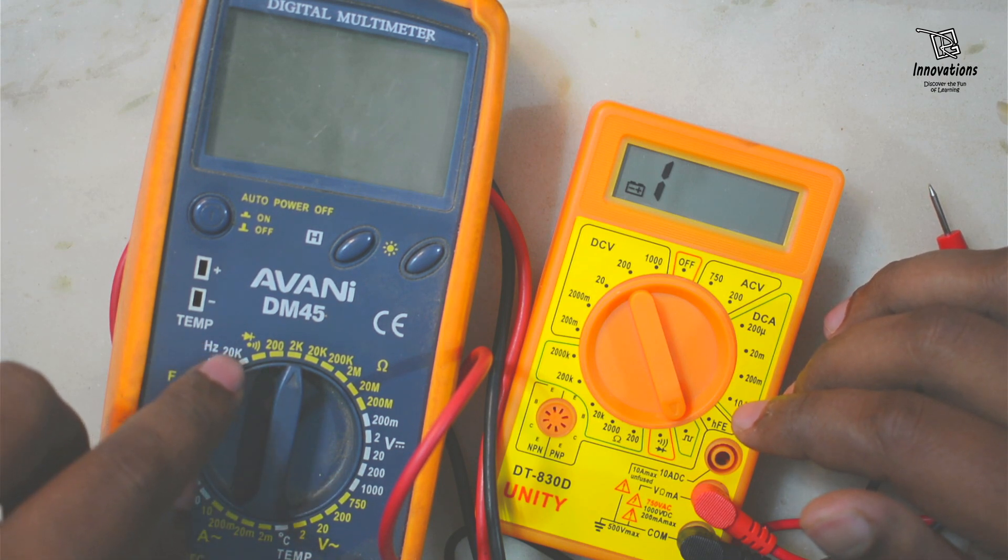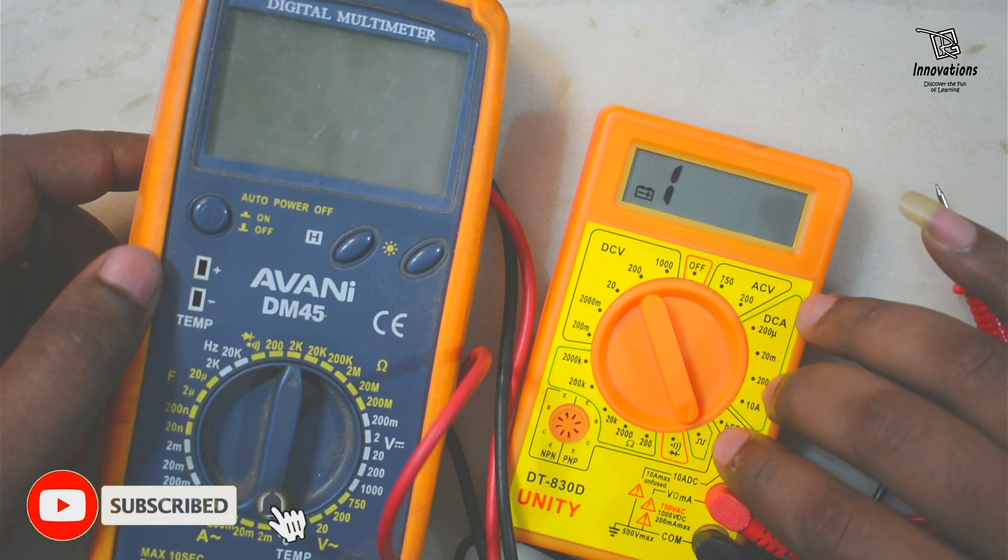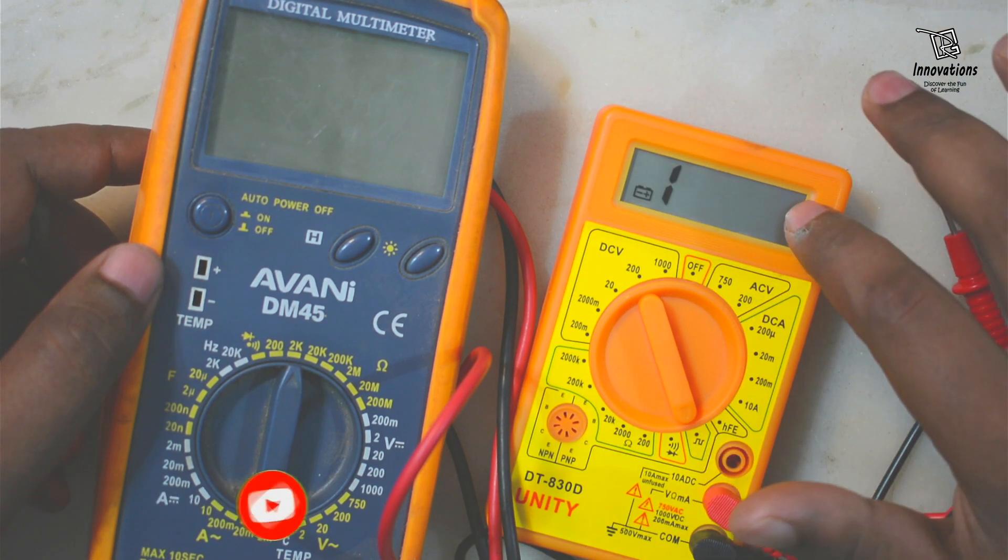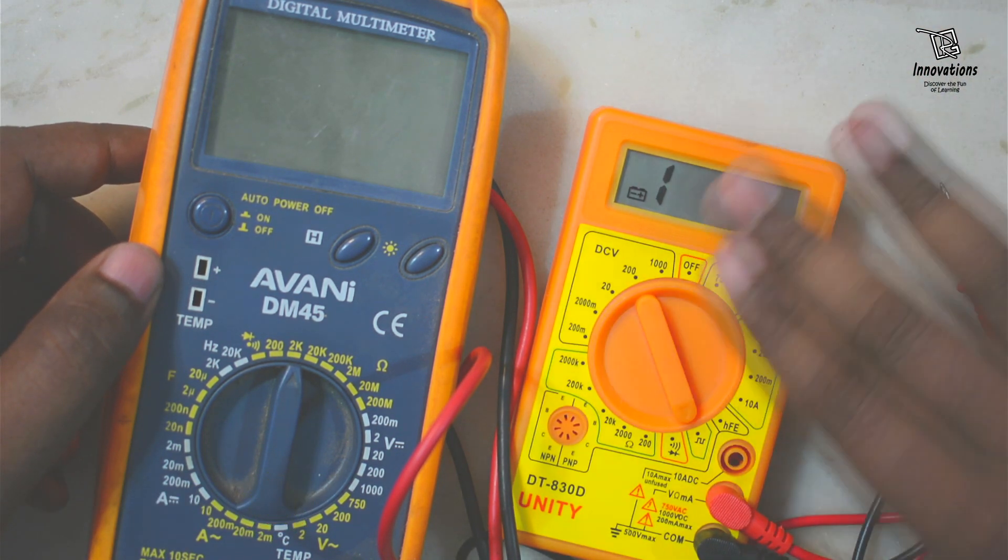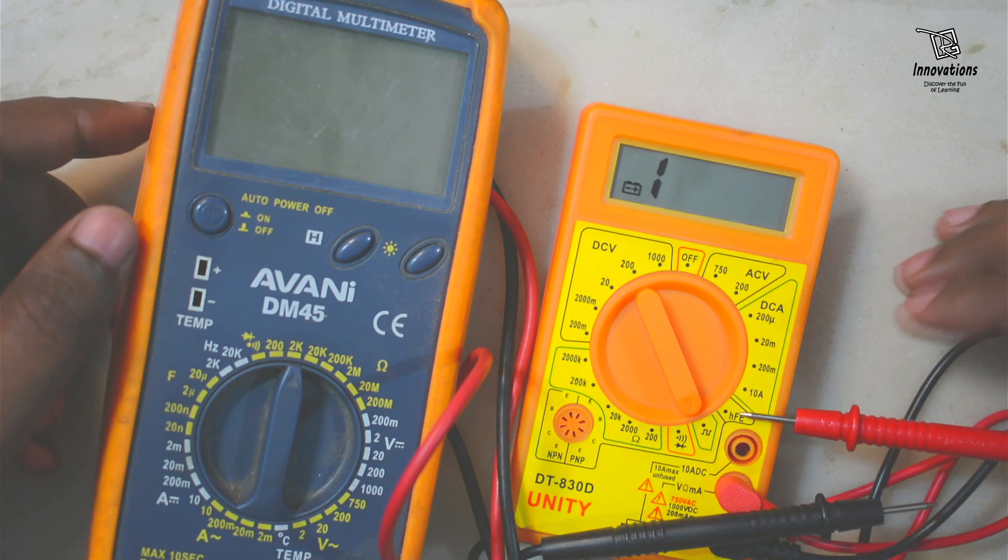So this multimeter is able to measure the frequency up to 20 kilohertz. But this multimeter does not measure frequency. Instead it generates a square wave. Here in the screen, it does not show anything. Nothing happens on the screen. It only generates an output at about three voltage peak.